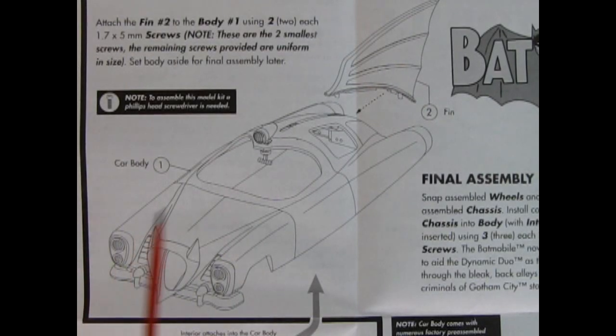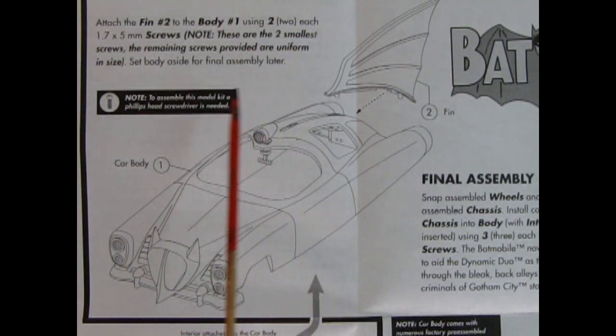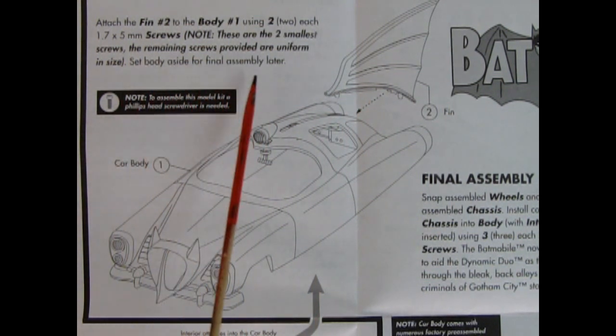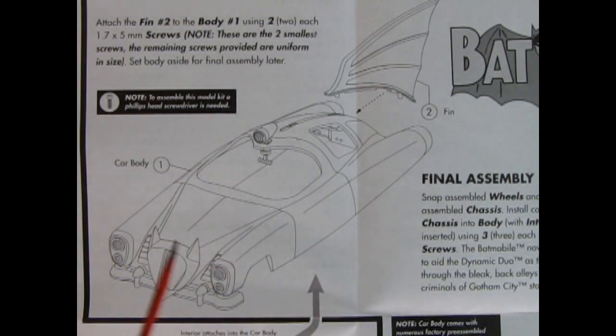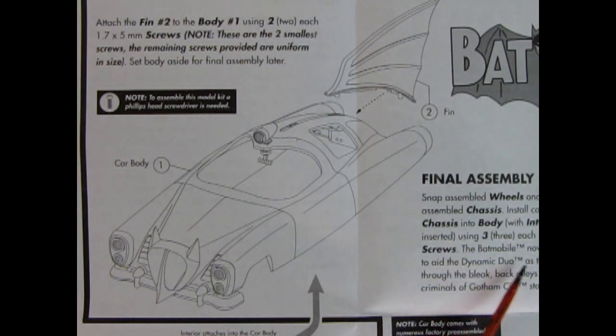Our final assembly step is to attach the great big bat fin to the back of the Batmobile and it says to use the smaller screws available because the rest of the screws are actually all the same size. So the small ones are for the fin and then you would put the assembled interior up into the body and attach it at its screw points there and then add the chassis and screw that in underneath. And then over here on the side it says the Batmobile now stands ready to aid the dynamic duo as they cruise through the bleak back alleys where the criminals of Gotham City stay hidden.